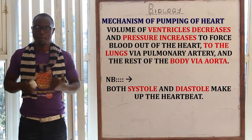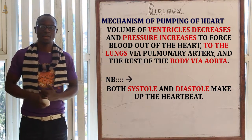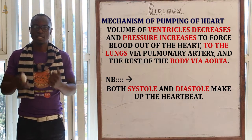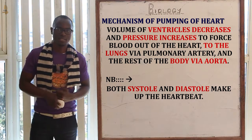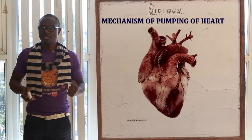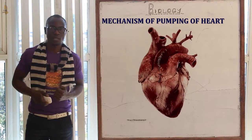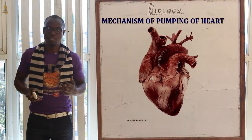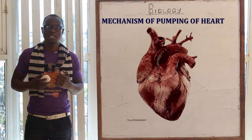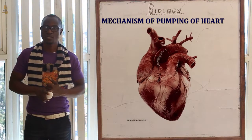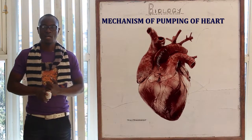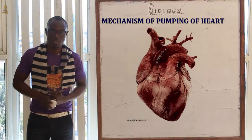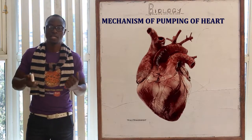Blood is forced to the lungs via the pulmonary artery, and to the rest of the body via the aorta from the left side. Both systole and diastole make up the heartbeat — if you feel your heartbeat, you will feel two beats. The first beat is for the systole and the second beat is for the diastole.